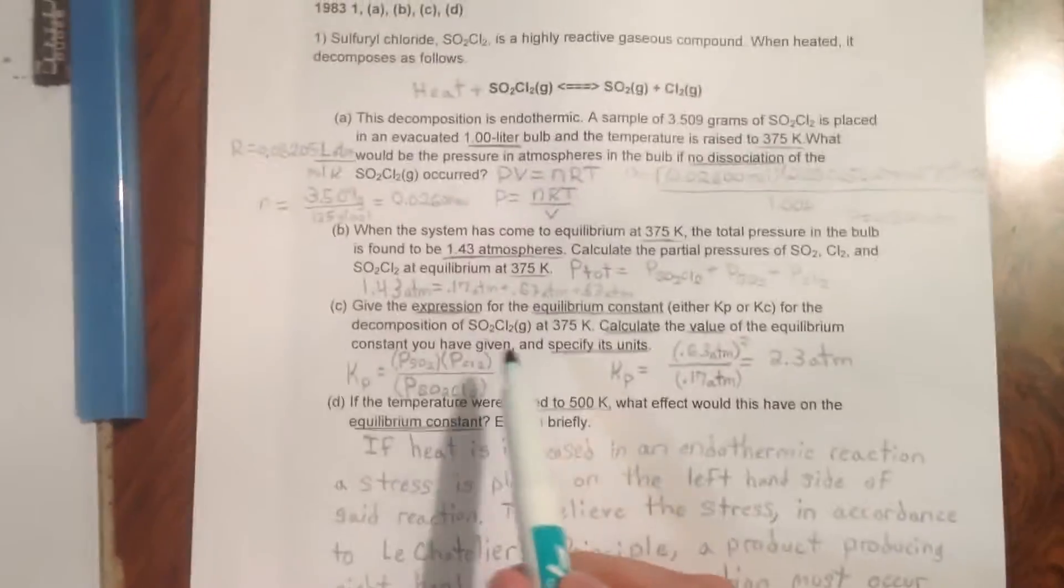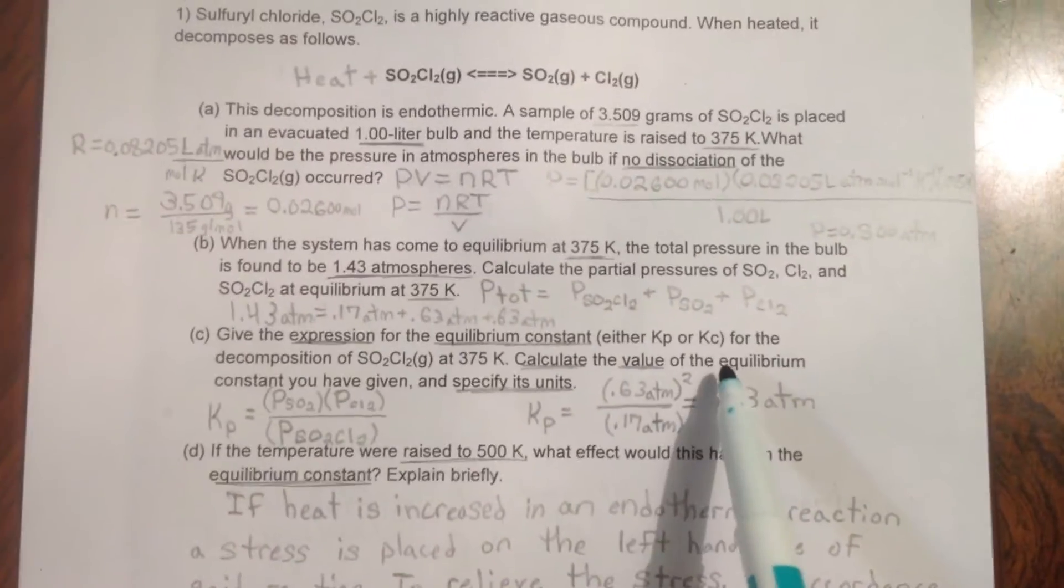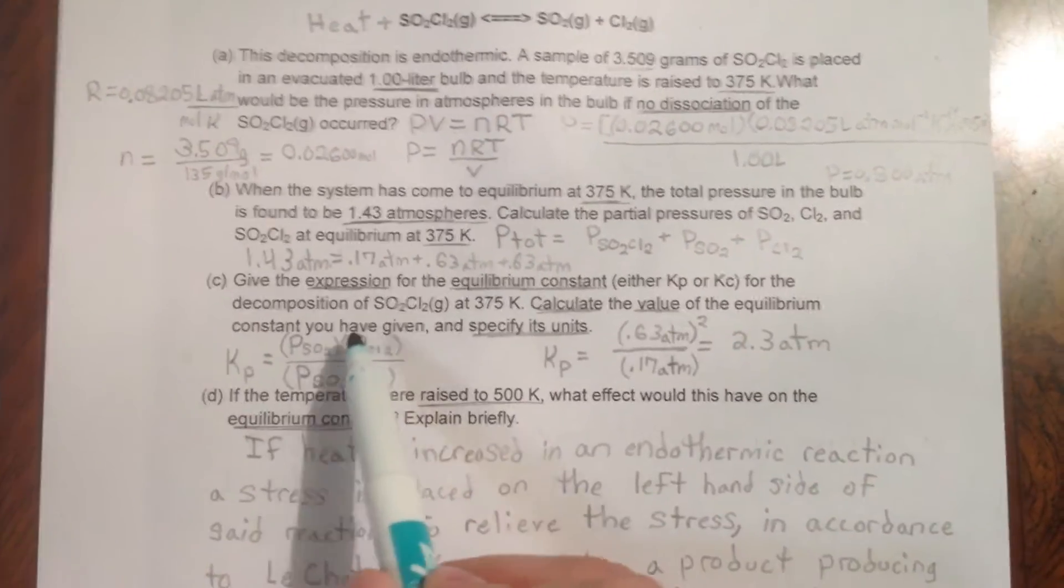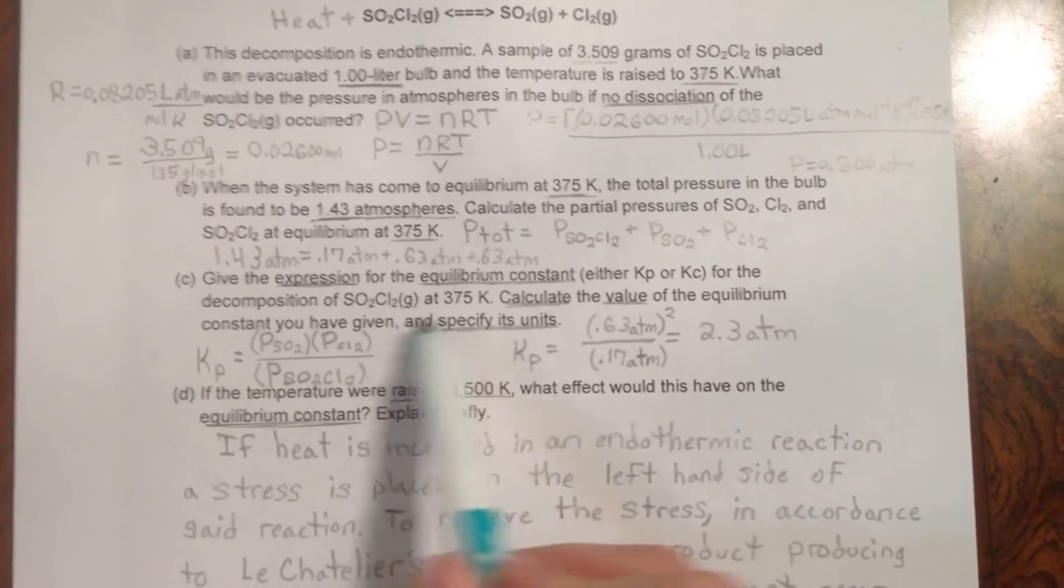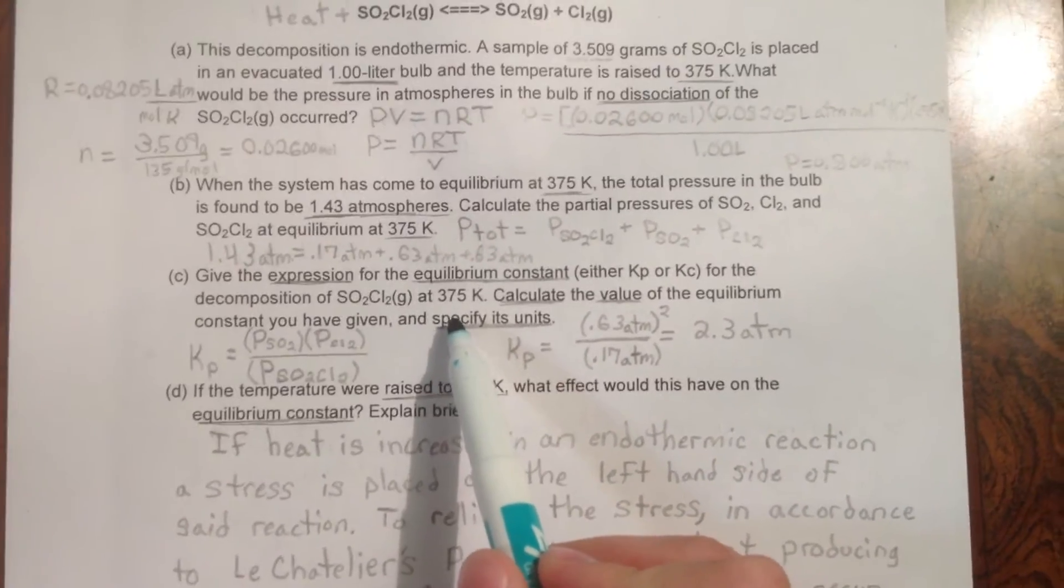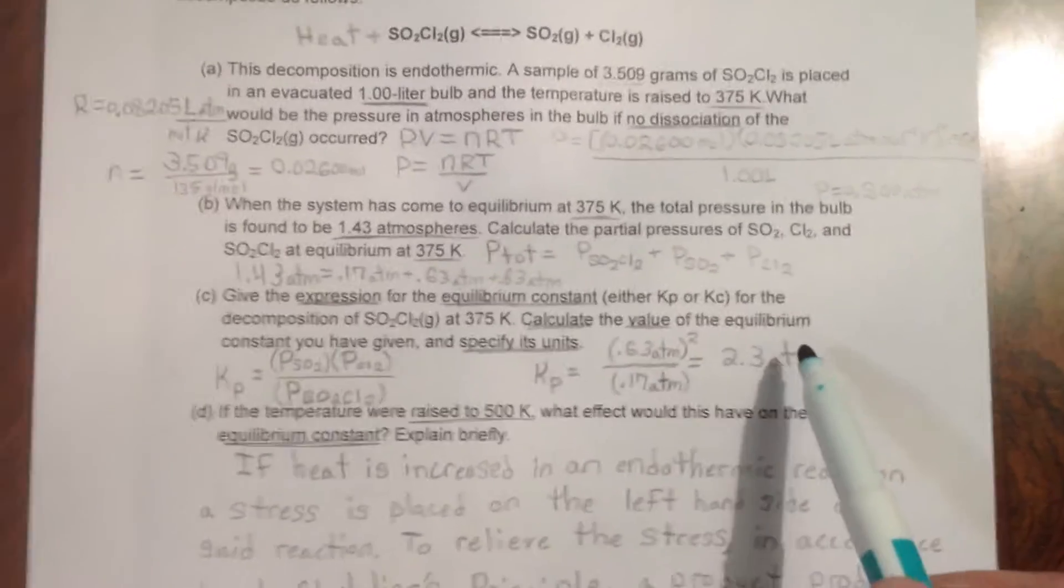Part C. Give the expression for the equilibrium constant, either Kp or Kc, for the decomposition of SO2Cl2 gas at 375 degrees Kelvin. Calculate the value of the equilibrium constant you have given and specify its units.